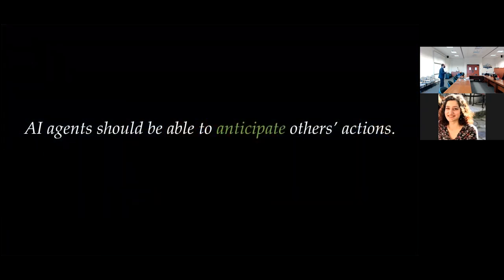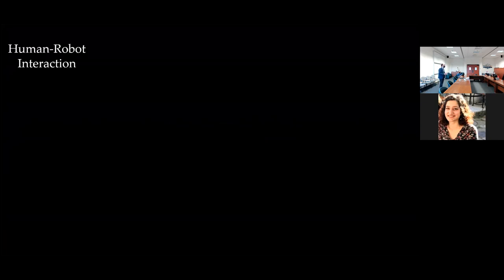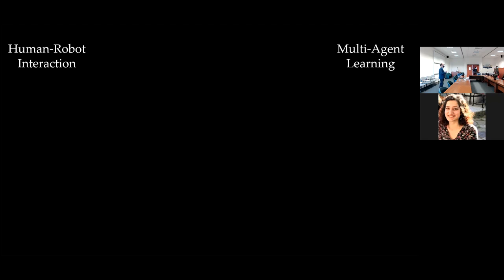In my PhD, what I'm trying to do is make AI agents anticipate others' actions by having AI agents learn what humans are trying to do — learning their objectives or reward functions. I'm focusing on three different things: human-robot interaction (though the agent doesn't need to be human, it can be another robot), learning reward functions or objectives of other agents, and then using that information in my planning pipeline to better plan my actions or policies.